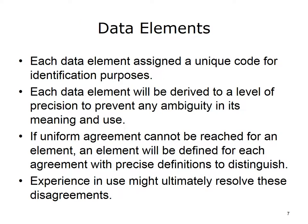A code identifier is important because it cannot be misunderstood. It is the key to finding all the characteristics of the data element — the index into the metadata dictionary. The code should have no meaning; it is simply a pointer. It may have a check digit, a mathematical algorithm that weights numbers in the code sequence to identify entry errors. For example, if I type 1, 2, 3, 4, 6, 7 plus check digit of 2, rather than 1, 2, 3, 5, 4, 6 plus 2, the algorithm will recognize the switching of numbers. Each data element will be defined to a level of precision to prevent any ambiguity in its meaning and use.